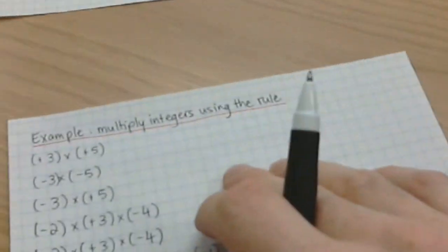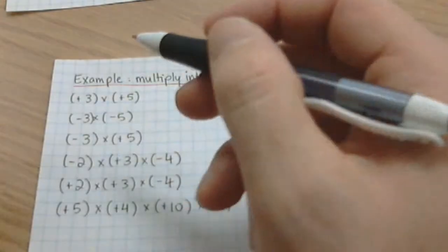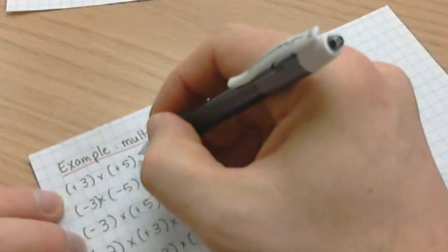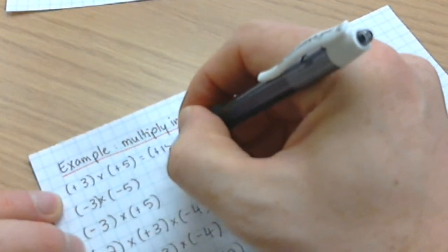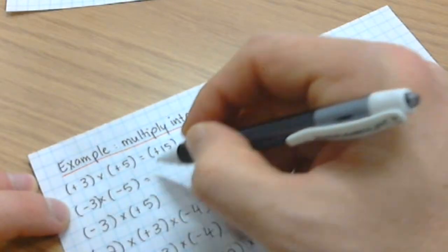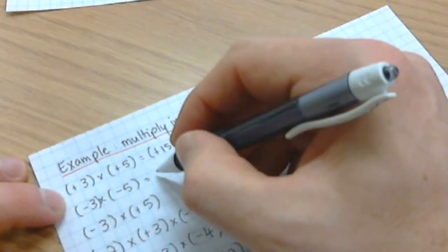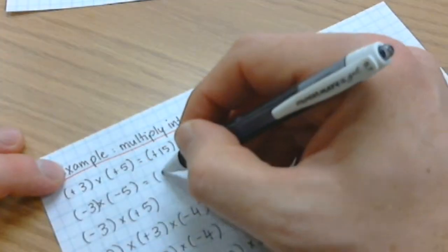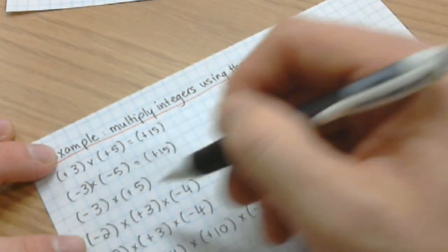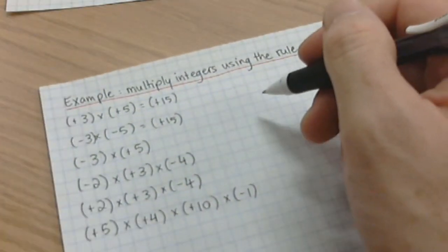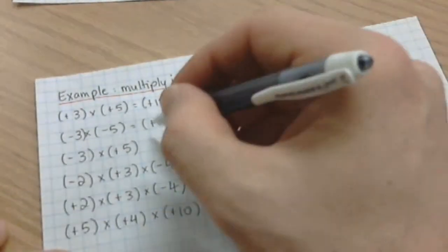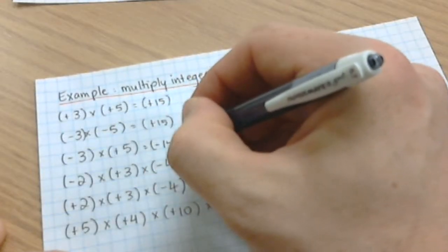Let's go through some practice. Positive three times positive five — positive 15. Here I have two negative signs; it's an even number, so it's positive 15. Here I have an odd number of negative signs: negative three times positive five, so my answer's negative because it's an odd number.